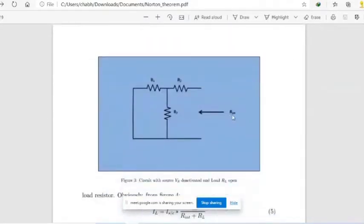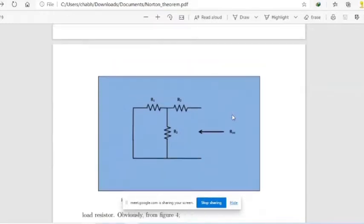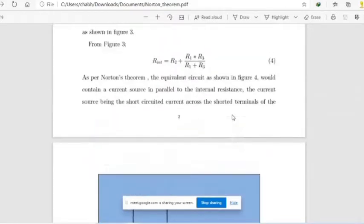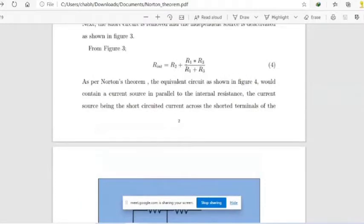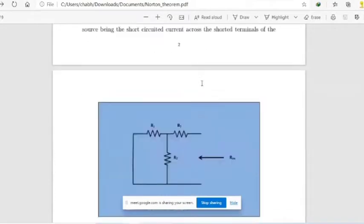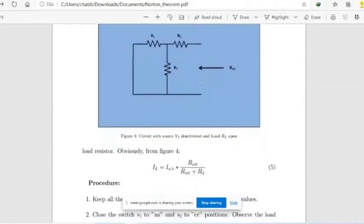This RINT is calculated using this formula: R2 plus R1 into R3 divided by R1 plus R3. After this step we have both ISC which is short circuit current and RINT which is internal resistance.